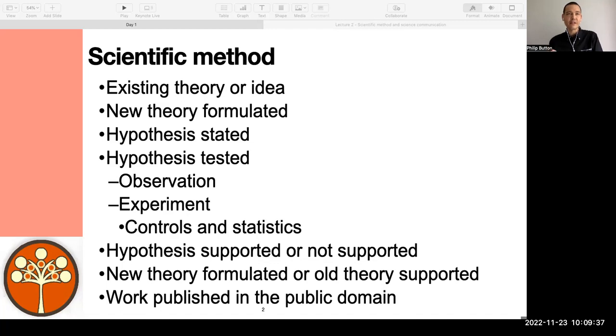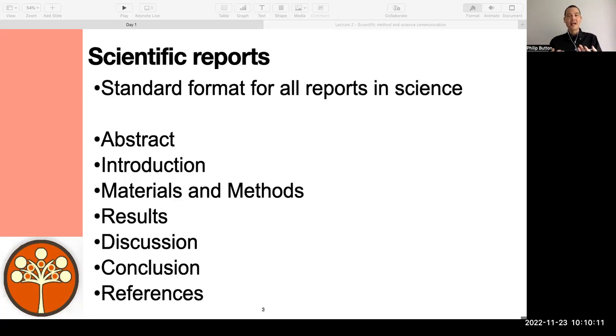Otherwise, that means that the old theory will then be supported, because even though you produced data to test a hypothesis, if it wasn't statistically valid or supported, then that means you have advanced knowledge, but you haven't supported that new hypothesis. Then what you need to do is publish your work in the public domain so that other people, other scientists know that you've actually done this work, so that they don't end up doing the work again.